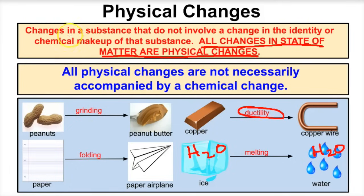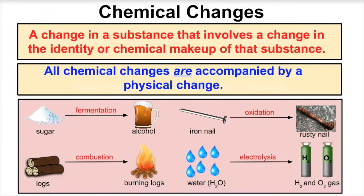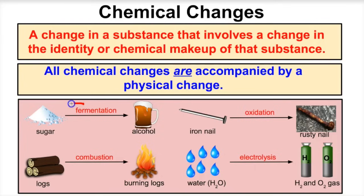Now let's take a look at chemical changes. Chemical changes are changes in a substance that do involve a change in the identity or chemical makeup of that substance. For example, if we take some sugar and turn it into alcohol, that process is called fermentation. We have sugar here, which is one type of compound, and alcohol, which is a totally different substance — so that is a chemical change.